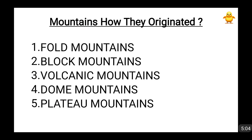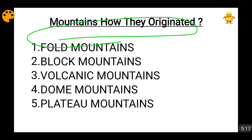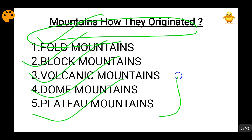Now the most important classification of mountains is based on how exactly these mountains originated — their mode of origin. On this basis, mountains can be classified into fold mountains, block mountains, volcanic mountains, dome mountains, and plateau mountains. This is the most important classification, and it helps you understand the distribution of mountains all over the world because these categories completely describe how mountains were originally formed, giving the geological history of the region in which they are found.